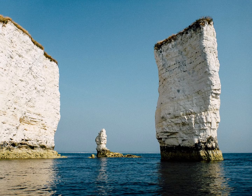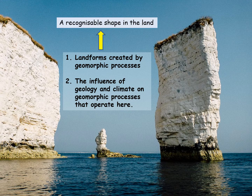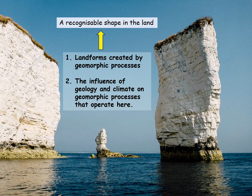In this presentation we're going to be looking at two things: the landforms that are being created, and the influence of geology and climate on the processes creating those landforms. A landform is simply a recognizable shape — in this picture here is a stack, and over here is a cliff. That's all a landform is: just a shape you recognize.